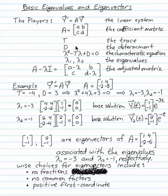The trace is a plus d, and the determinant is ad minus bc. The characteristic equation gives rise to two eigenvalues, and when I subtract an eigenvalue on the main diagonal, let's call that the adjusted matrix.